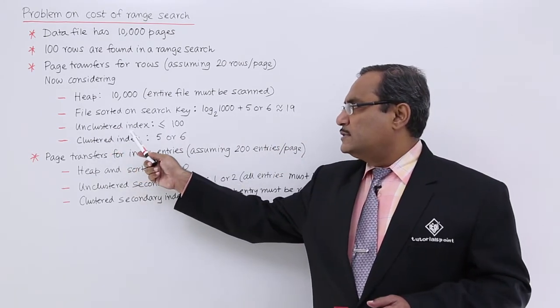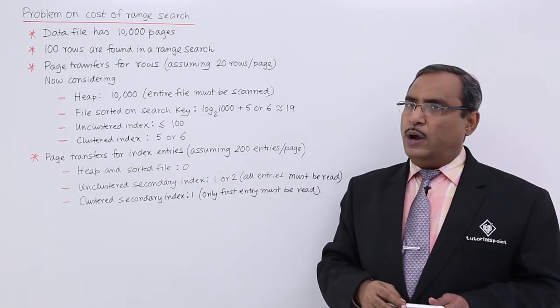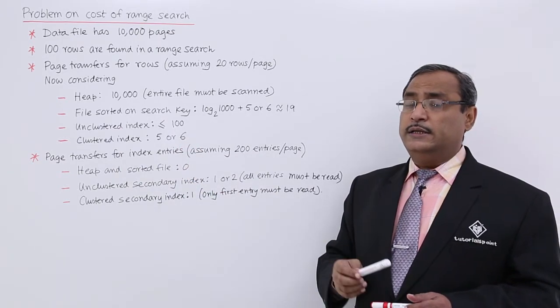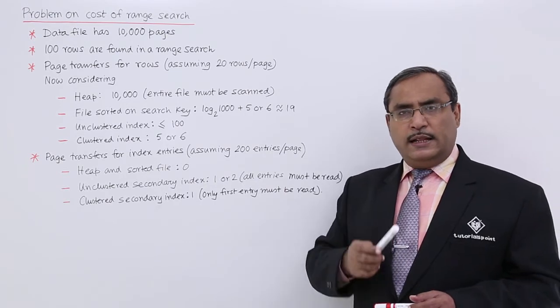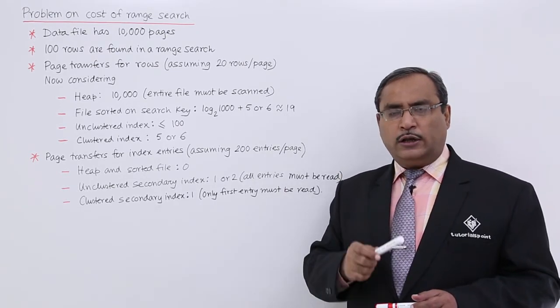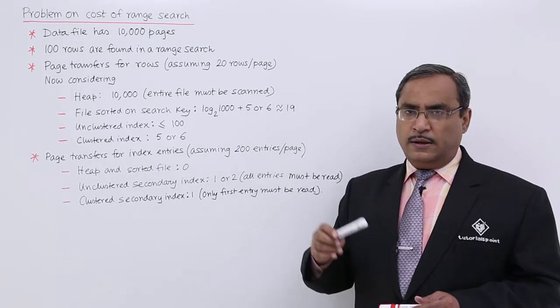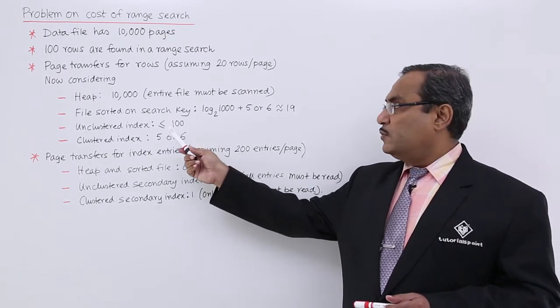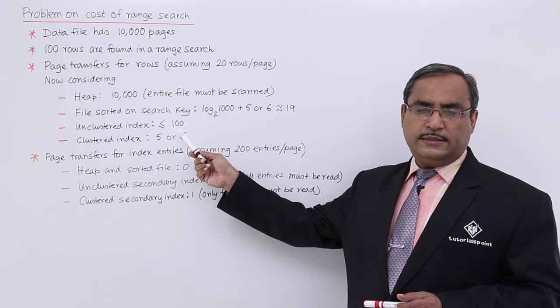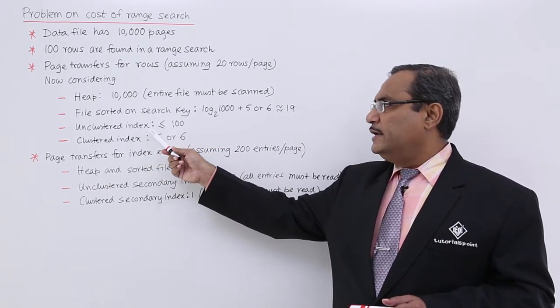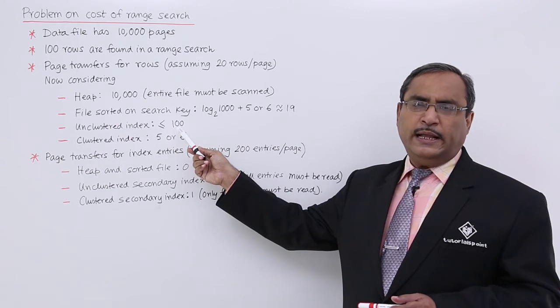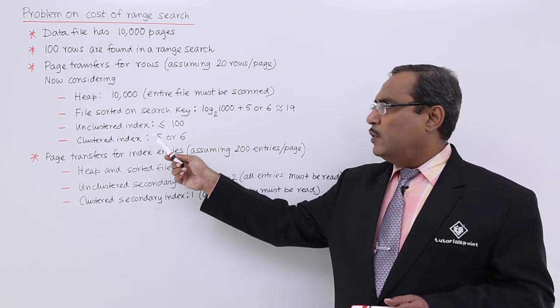In case of unclustered index it will be less than equal to 100 because here this is unclustered. That means the index entries are not in the same order in which the records are existing on the data file. That is why all the 100 indexes are to be searched. So that is why unclustered index in this case will be having the complexity less than equal to 100.